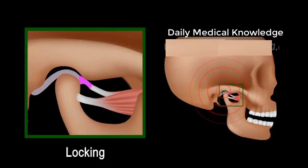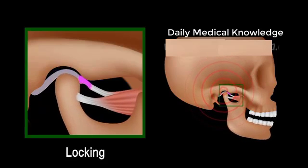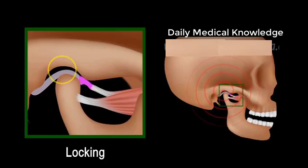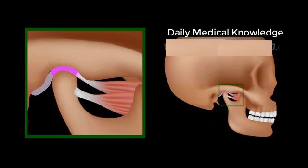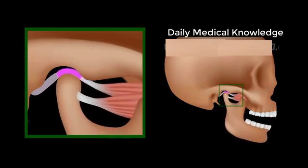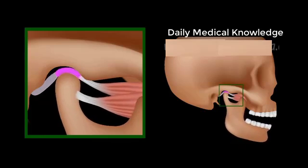Fortunately, in the majority of cases, the condition resolves by itself after some time. This is thanks to a process called natural adaptation of the retrodiscal tissue, which after a while becomes scar tissue and can functionally replace the disc. In fact, it becomes so similar to the disc that it is called a pseudo-disc.